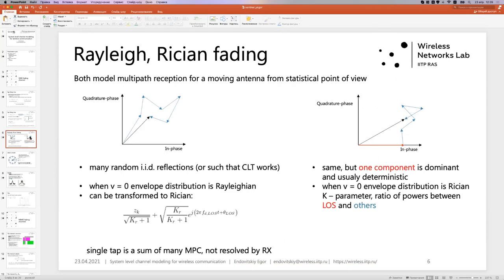There are two general fading processes. The first one is Rayleigh, and the second is Rician. They both model multipath reception for moving antenna from stationary statistical point of view. The first scenario on the left corresponds to Rayleigh fading. There are a lot of random identically independently distributed reflections, or such that central limit theorem works. And they sum with each other. And we are asked with the question, what is the resulted envelope distribution? And what is going on with the channel? When the velocity of antenna equals to one, the envelope is distributed according to Rayleigh distribution.